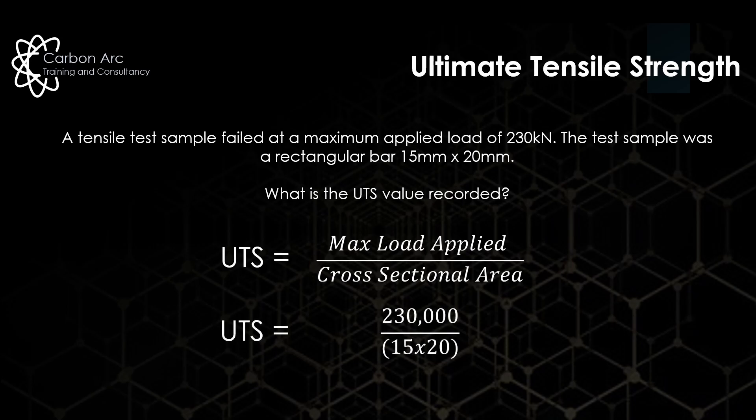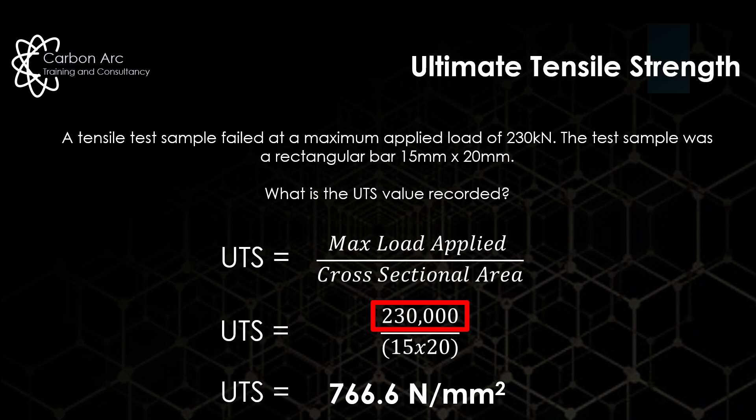We have a max load applied of 230 kilonewtons, but we write it as newtons — that's 230,000 newtons — and our cross-sectional area is 15 × 20. When we put them into the calculator we get 766.6 N/mm². The key thing to remember is that when we put it into the equation we move from kilonewtons to newtons. Sometimes there are two answer options — one in newtons and one in kilonewtons — and you need to make sure you apply the right numbers.